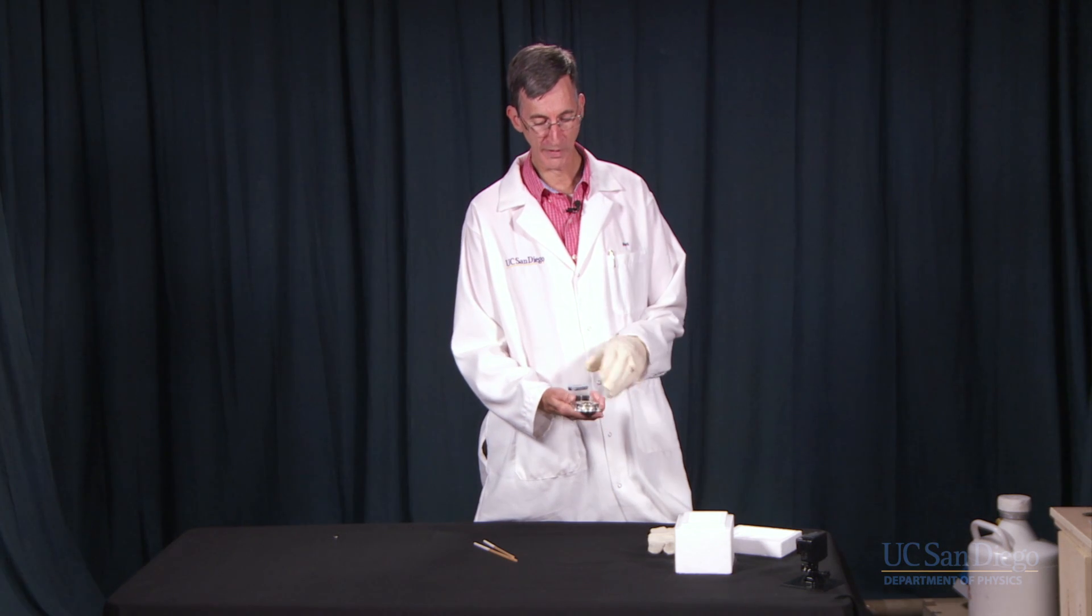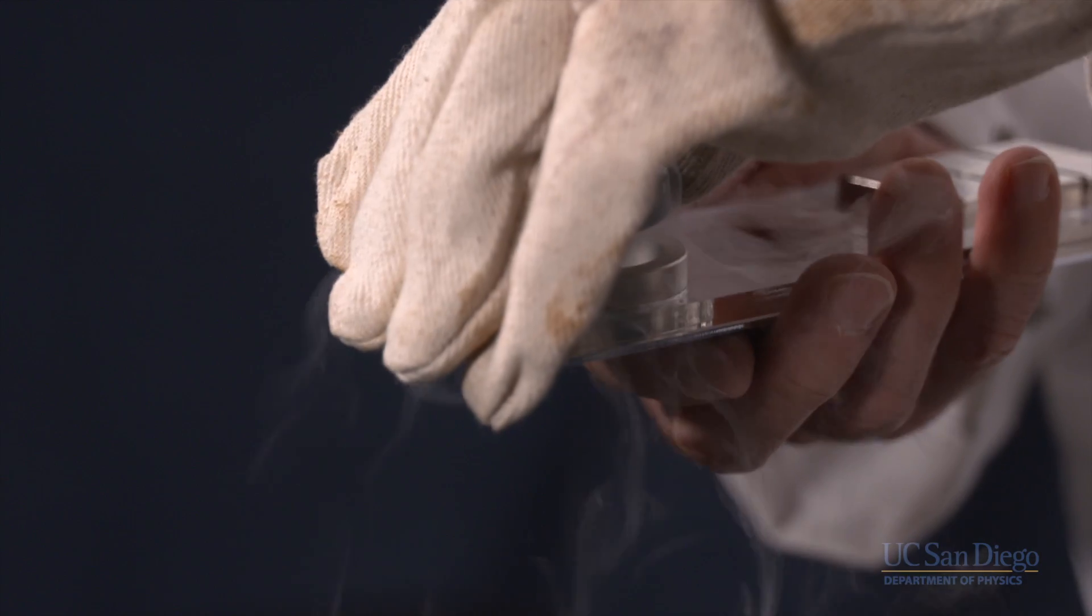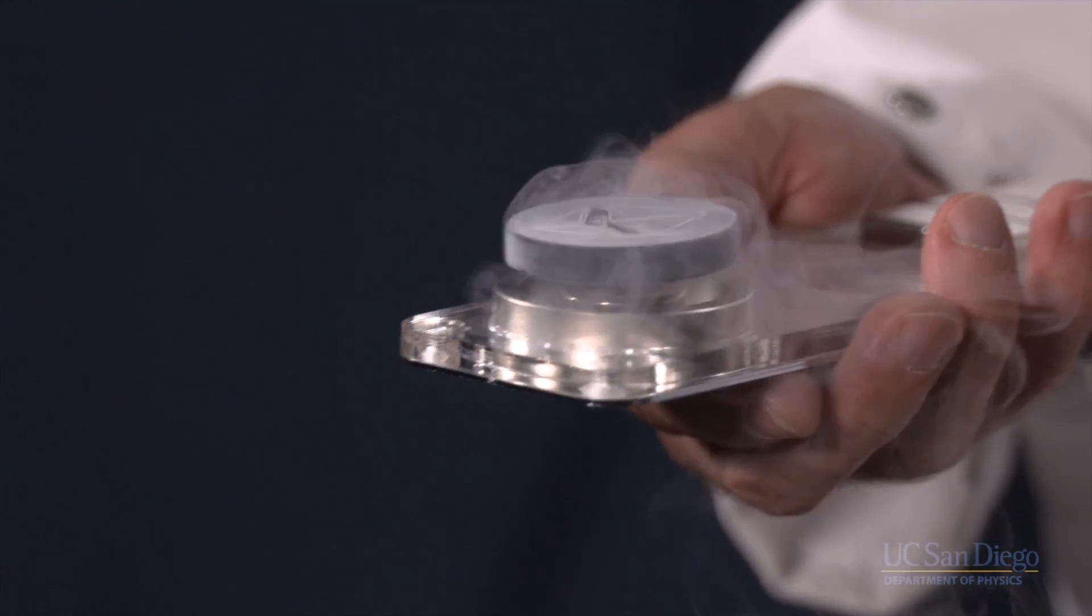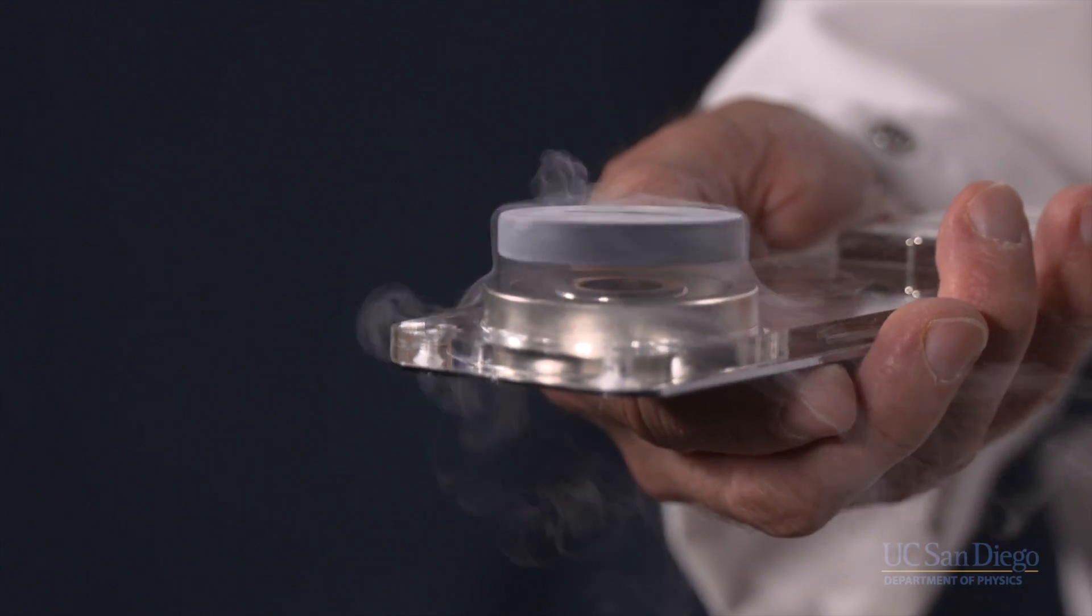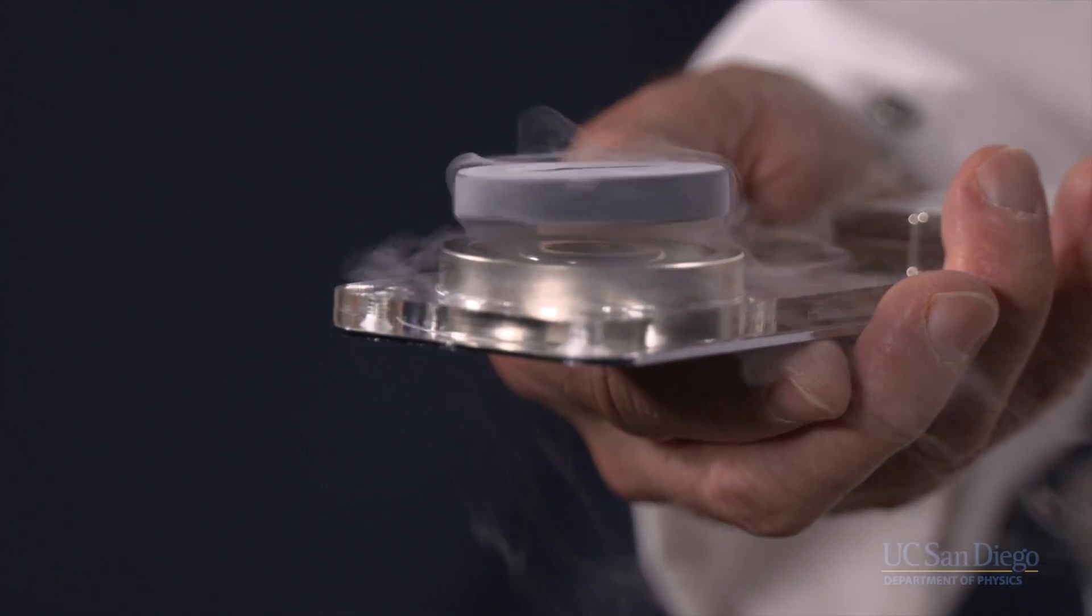Now if I move it over to the circular side, because the magnetic field doesn't change as it rotates, I can freely rotate the superconductor even though it remains levitating above it.